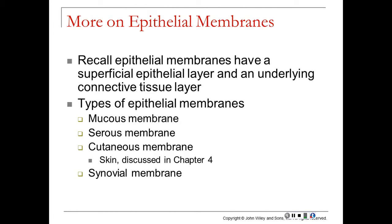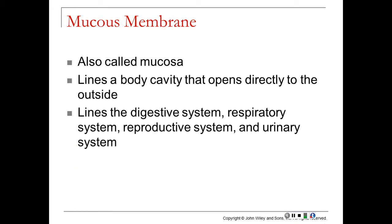Epithelial membranes have a superficial epithelial layer and a connective tissue layer. There are four main types: mucous membranes, serous membranes, cutaneous membranes (skin), and synovial membranes. Mucous membranes, also called mucosa, line body cavities that open to the outside — the mouth, anus, and vagina — and are lubricated by mucus to stay moist. The digestive, respiratory, nasal, reproductive, and urinary systems are all lined with mucous membranes.